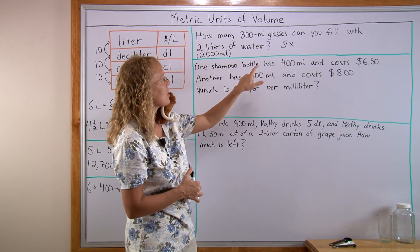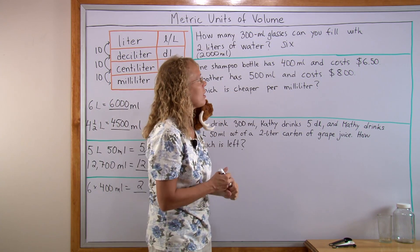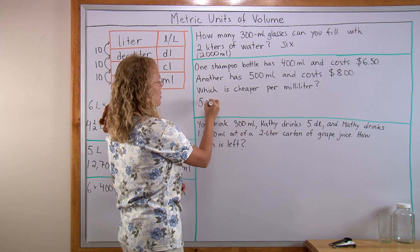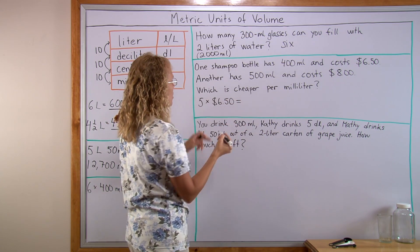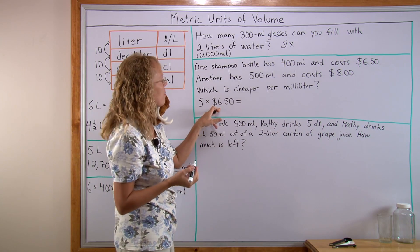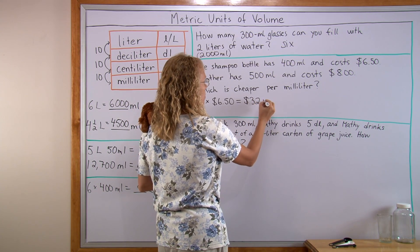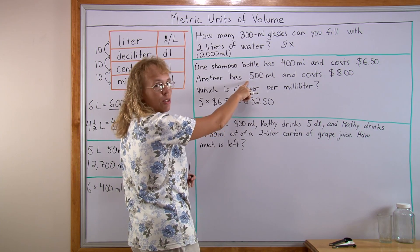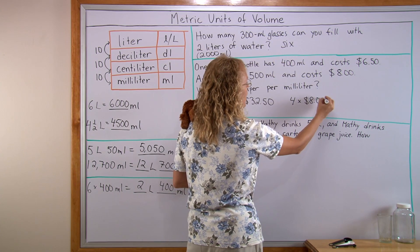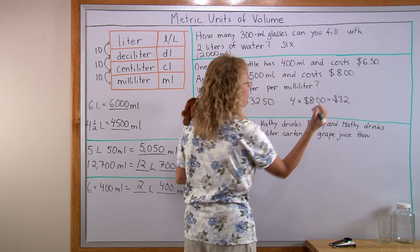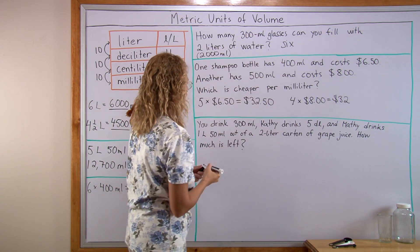To buy 5 bottles of the smaller one or 4 bottles of the larger one — that answers the question. 5 times $6.50: 5 times 6 is $30, and 5 times 50 cents is $2.50, so $32.50. Then the other ones: 4 bottles at $8.00 each is 4 times 8 dollars = $32.00. Now you can see which one is cheaper — the 500-milliliter bottle is cheaper per milliliter.